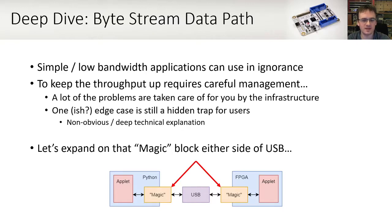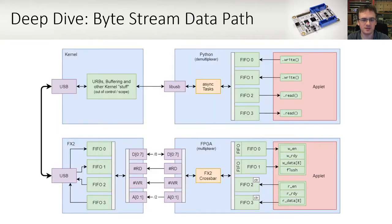We're going to expand on those magic blocks shown below. Even this diagram is simplified. All of the kernel activities and buffering are omitted as out of control and out of scope. Python is reasonably well behaved using one async IO task for each of transmit, receive, and FIFO — and it's on a PC so it has plenty of memory. The USB link and the FX2 FPGA crossbar are more complex and we'll cover this now.